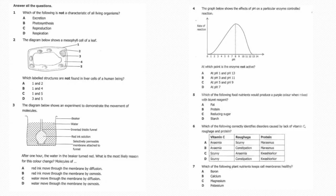Question number one: Which of the following is not a characteristic of all living organisms? The answer is B, photosynthesis. Question two: The diagram below shows a mesophyll cell of a leaf. Which labeled structures are not found in the liver cells of a human being? The answer is C, one and five—that's a cell wall and chloroplasts.